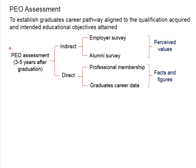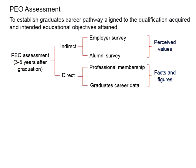When we talk about PEO assessment, we are referring to three to five years after graduation. Three to five years is the duration to transform a fresh graduate or young engineer into a senior engineer — this is the transition period for a fresh graduate to become an experienced engineer capable of carrying full engineering responsibility. We are monitoring this transition period.